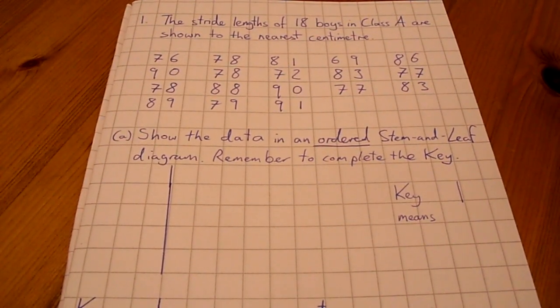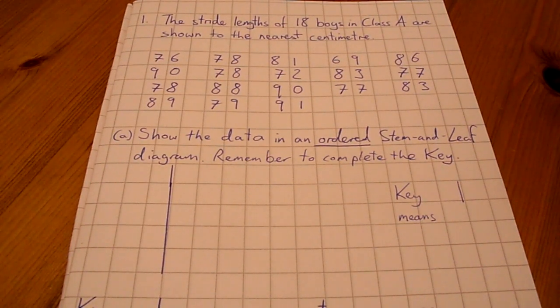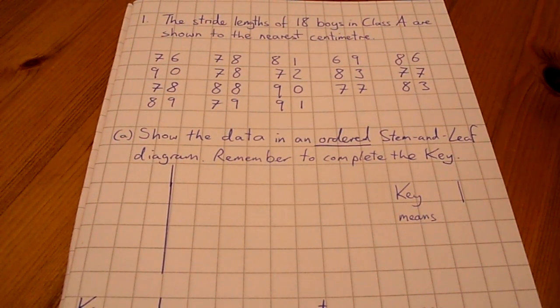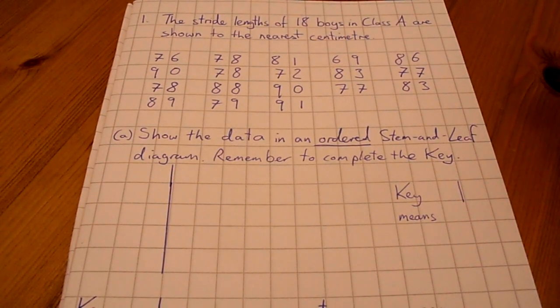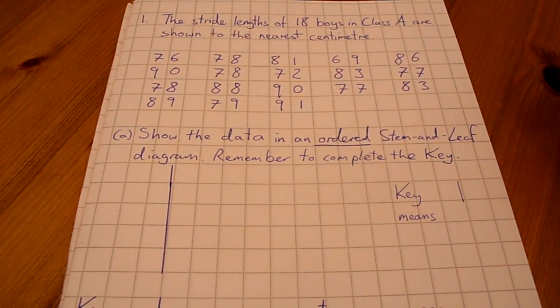Question 1 from the June 2011 AQA Maths Higher paper. We start with a question about stem and leaf diagrams. The stride lengths of 18 boys in class A are shown to the nearest centimeter. Show the data in an ordered stem and leaf diagram. Remember to complete the key.